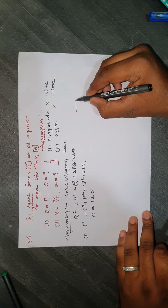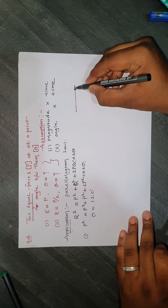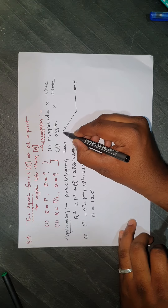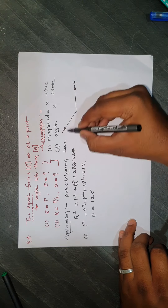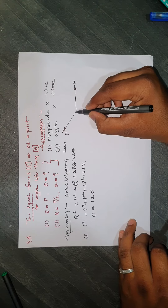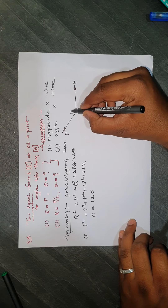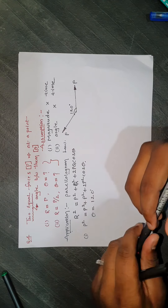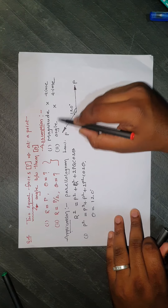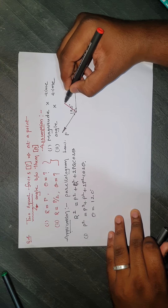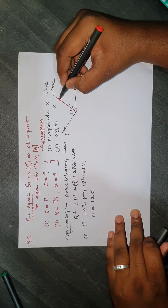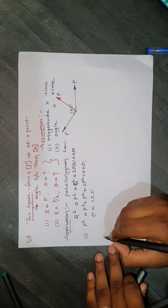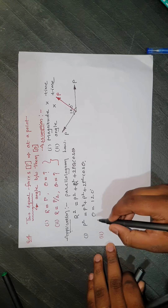Looking at the diagrammatic representation: one force has magnitude P, the other also has magnitude P, and they are separated by an angle of 120 degrees. The resultant always falls in between these two forces, and here the resultant is P as required by the first condition.